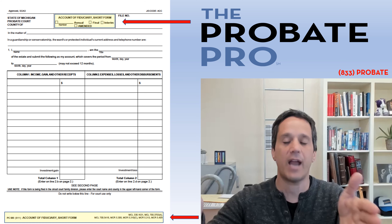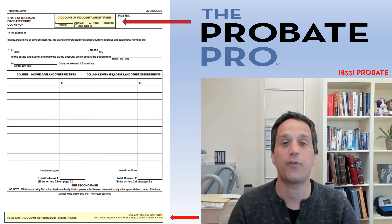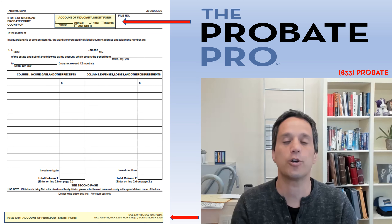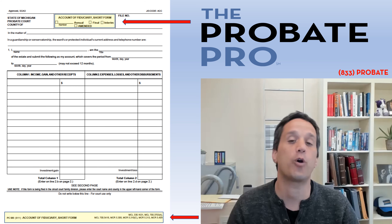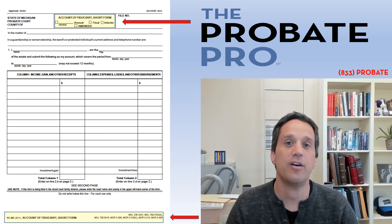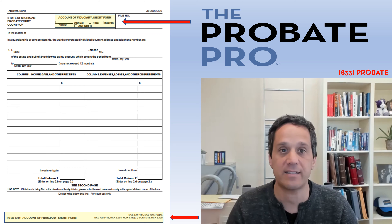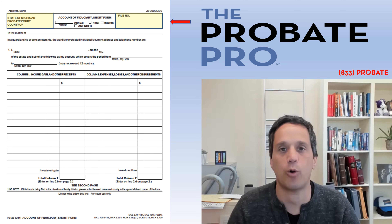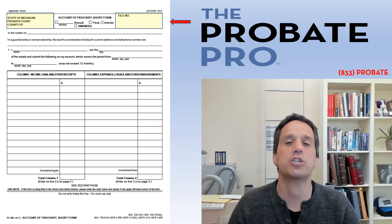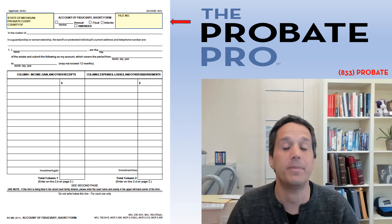An interim account is used when the court requires an accounting that is not based on the year anniversary but rather within that year period of time. At the bottom of the form is helpful information identifying the relevant statutes and court rules that apply. This form is also used in deceased probate estates in formal and supervised administrations. You then identify the county in which the probate court is being administered and the case number — most adult conservatorships end in the letters CA, and for a minor it would be CY.